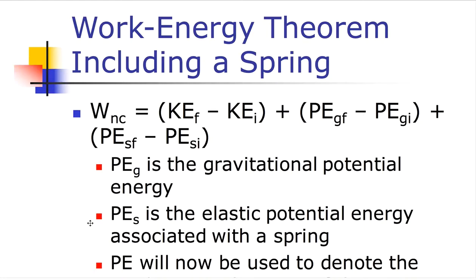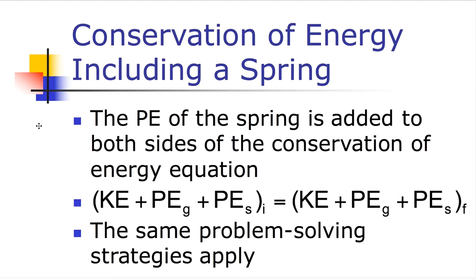We distinguish between the two types of potential energy — gravity and spring — using PE without any letter to represent the combination, the total potential energy in the system. The spring's potential energy is added to both sides of the conservation of energy equation. The left side is all initial energy and the right side is all final energy. If only conservative forces act and no energy is lost, the amount of energy at the beginning must equal the amount at the end, even though some energies may convert into other types.